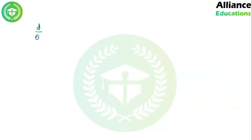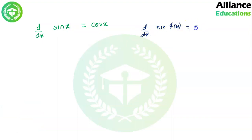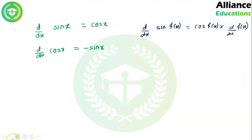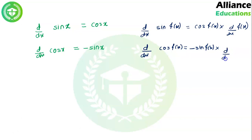Then d/dx of sin x — the derivative of sin x is cos x. So d/dx of sin(f(x)) gives cos(f(x)) multiplied by d/dx of f(x). Then d/dx of cos x — the derivative of cos x is −sin x. So d/dx of cos(f(x)) gives −sin(f(x)) multiplied by d/dx of f(x).